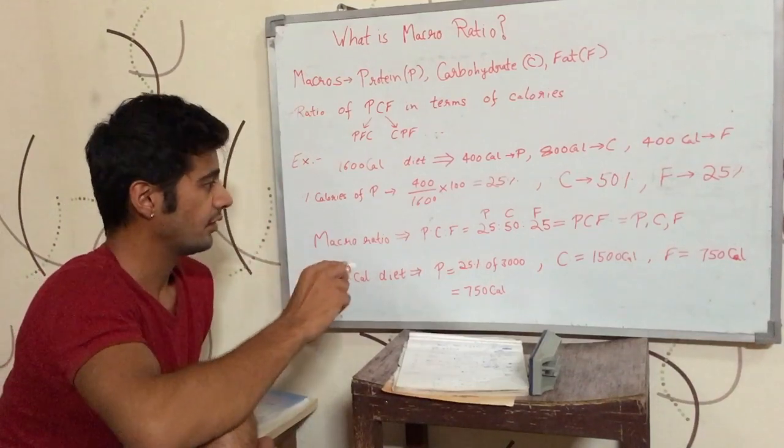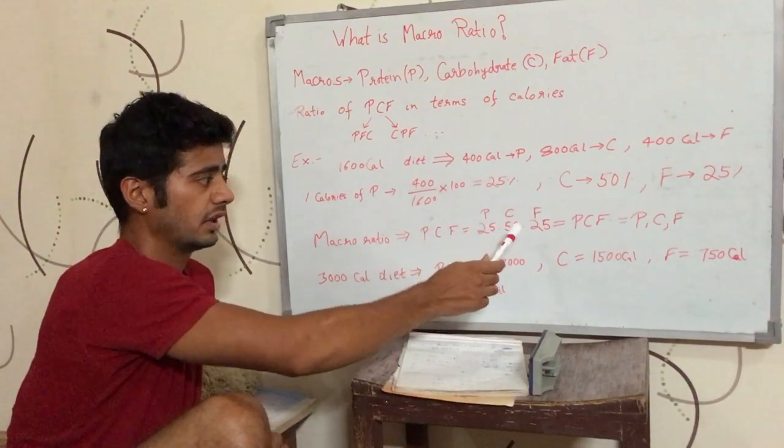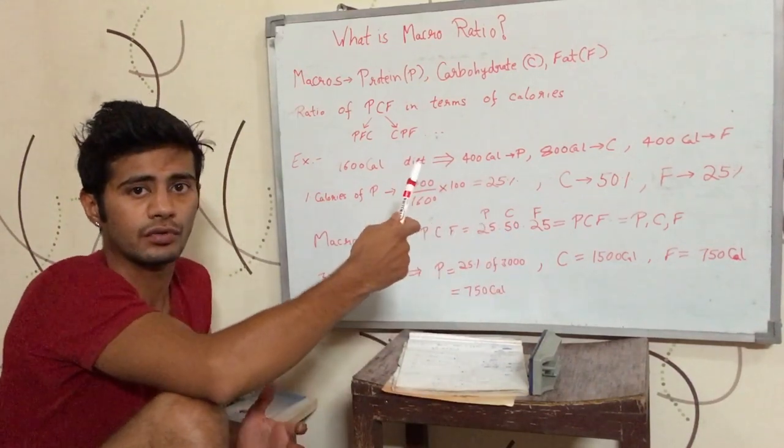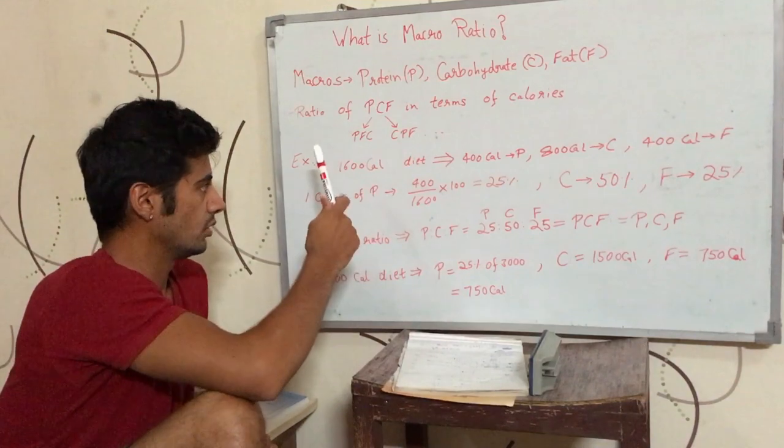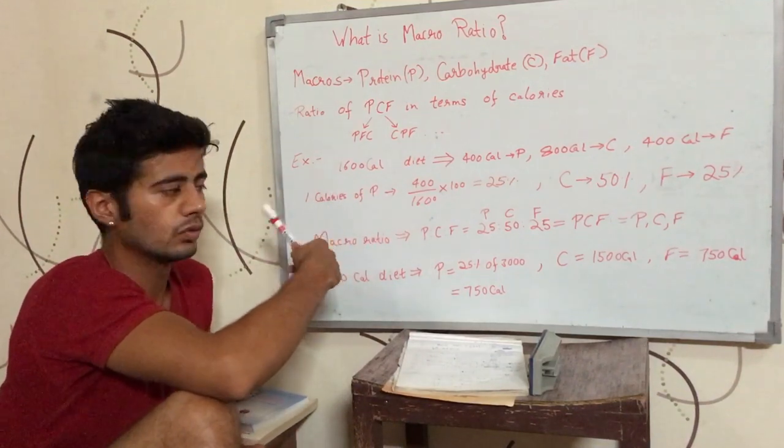And you can have a macro ratio in any amount of calories diet. So on 1600, 3000, 2500, 2400, 2200.